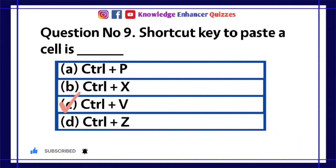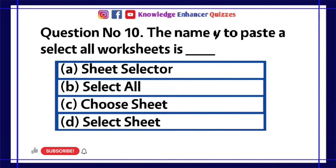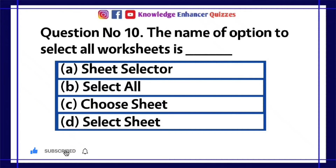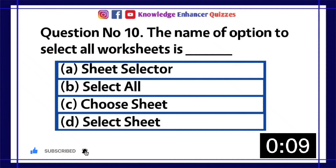Option C is the right answer. Question number 10: The name of the option to select all worksheets is: A. Sheet Selector, B. Select All, C. Choose Sheet, D. Select Sheet.